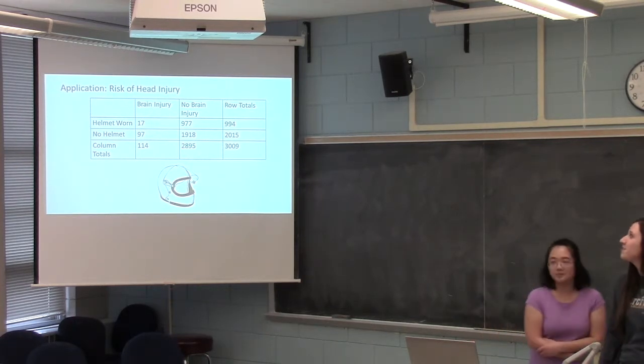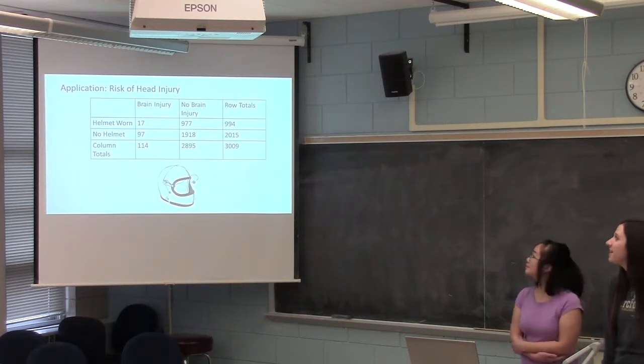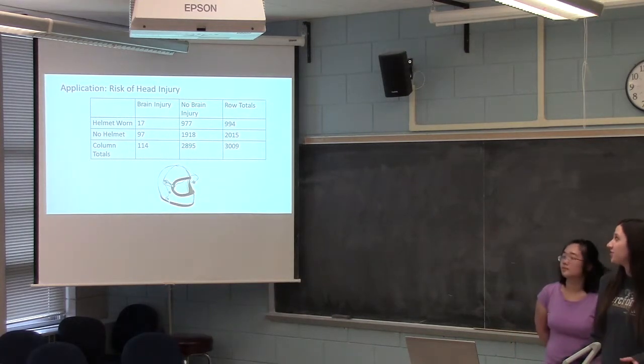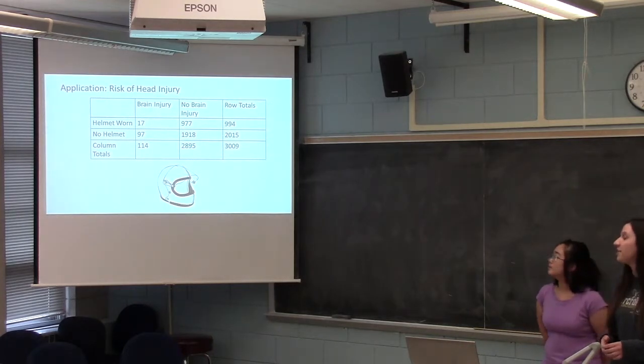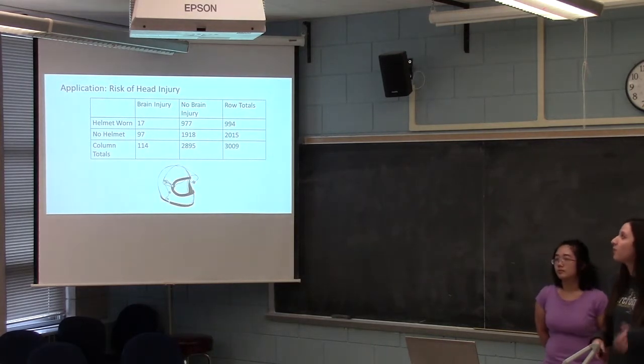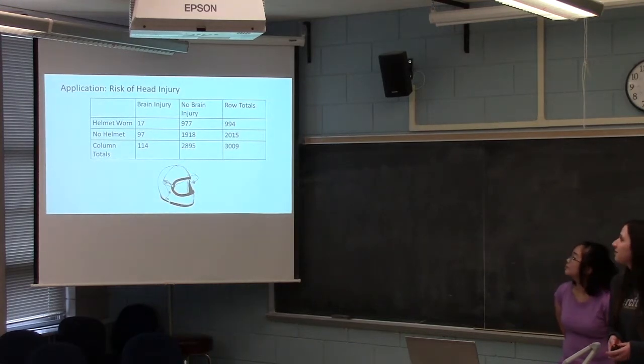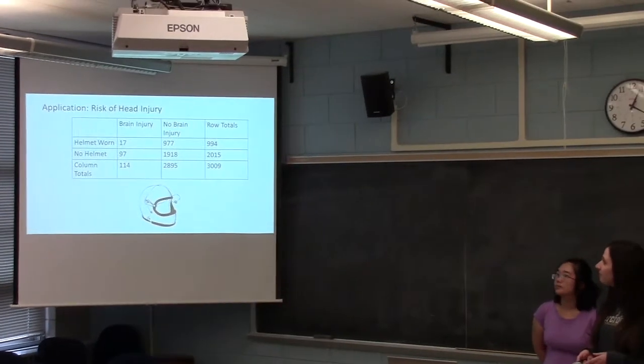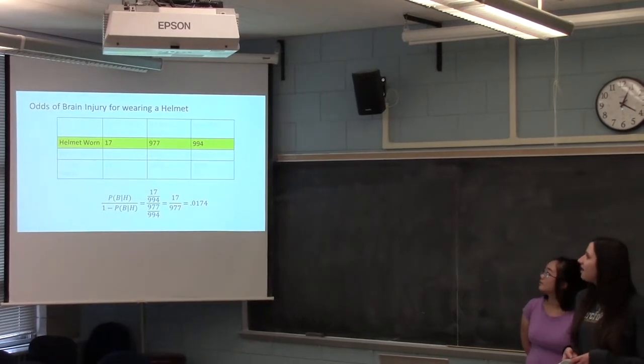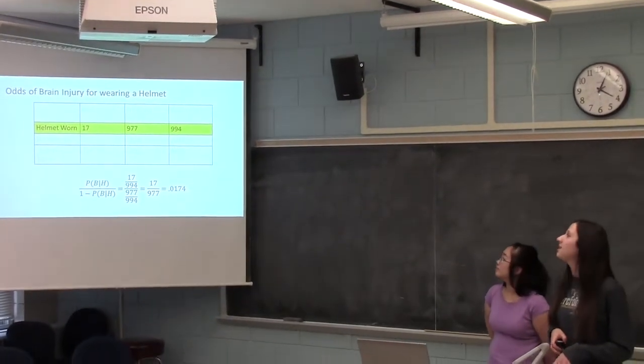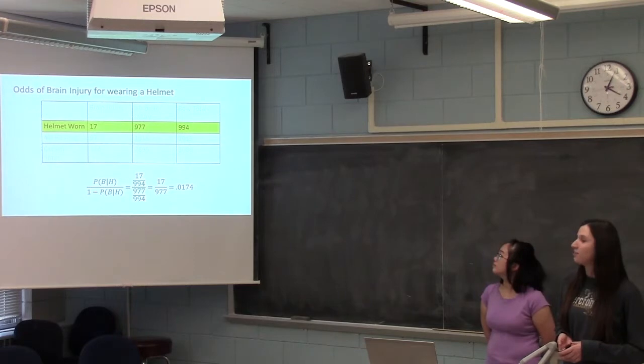Alright, so for an example, let's say a researcher is interested in finding out how many brain injuries did occur and did not occur during a motorcycle accident, and how many of them were wearing a helmet and were not wearing a helmet. So this chart up here shows this information. So to find the odds ratio, we're first going to look at the odds of having a brain injury and not having a brain injury based on whether they were wearing a helmet.